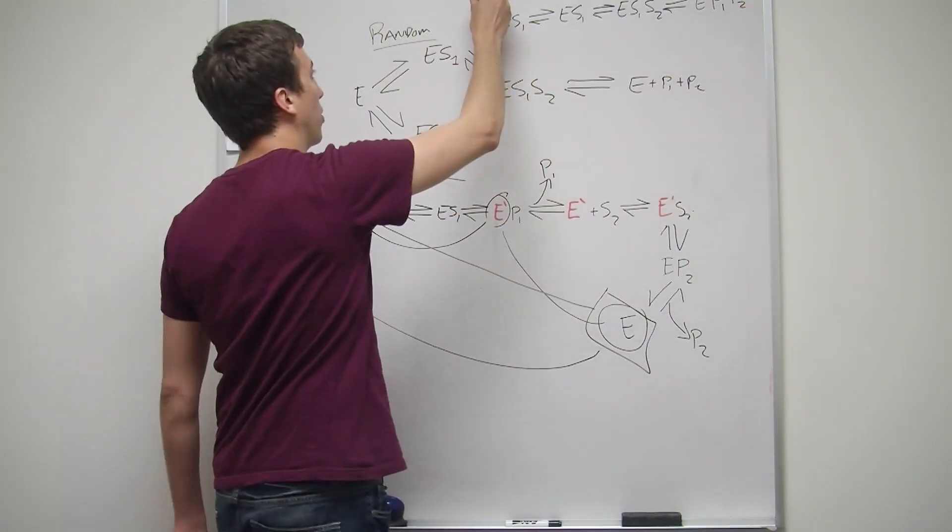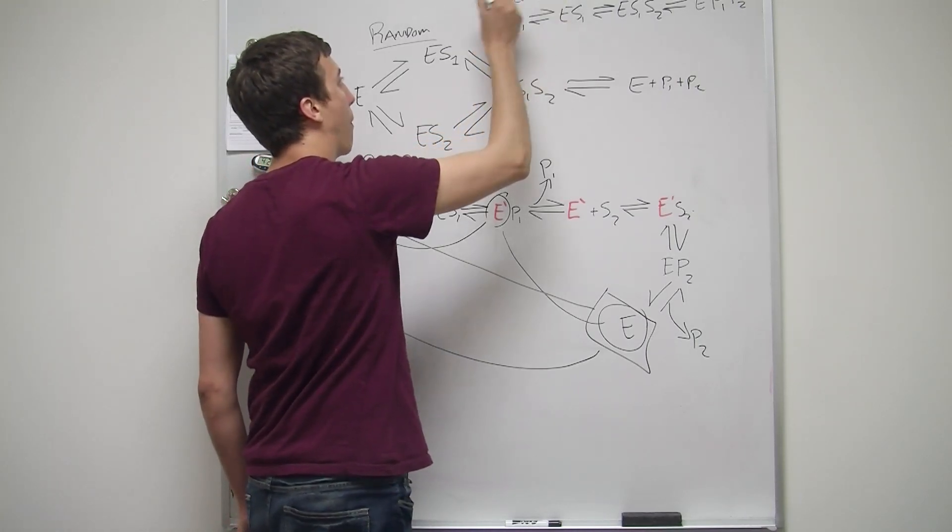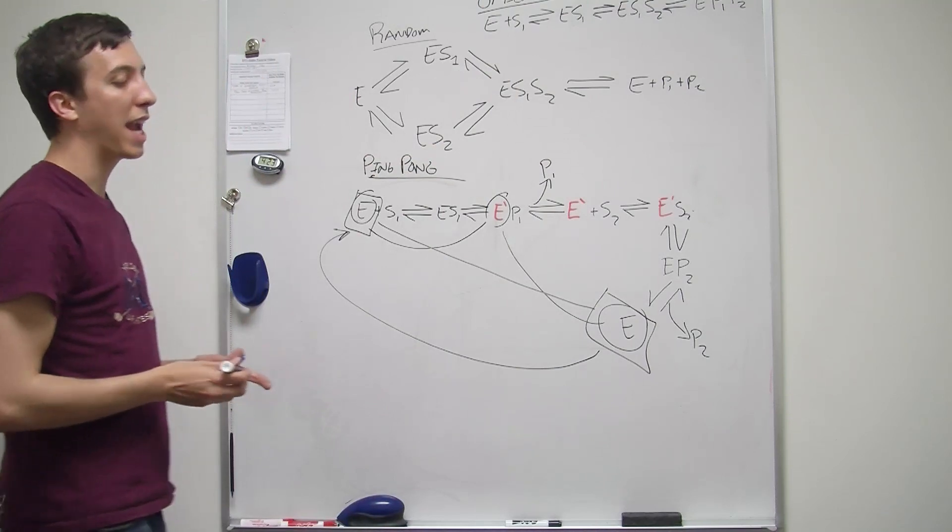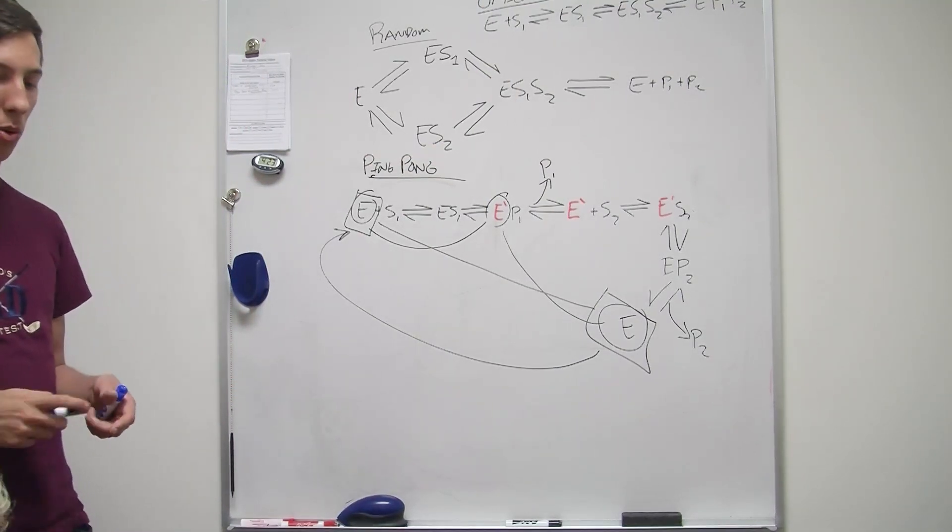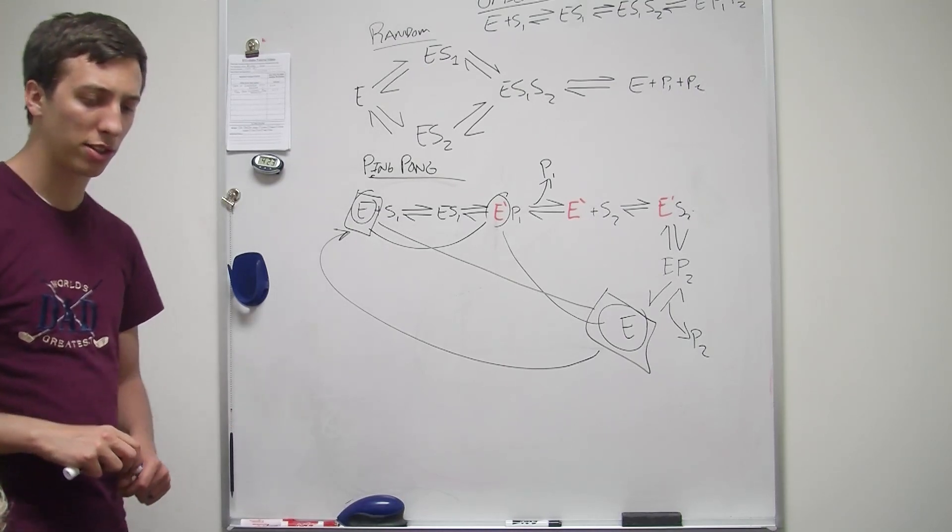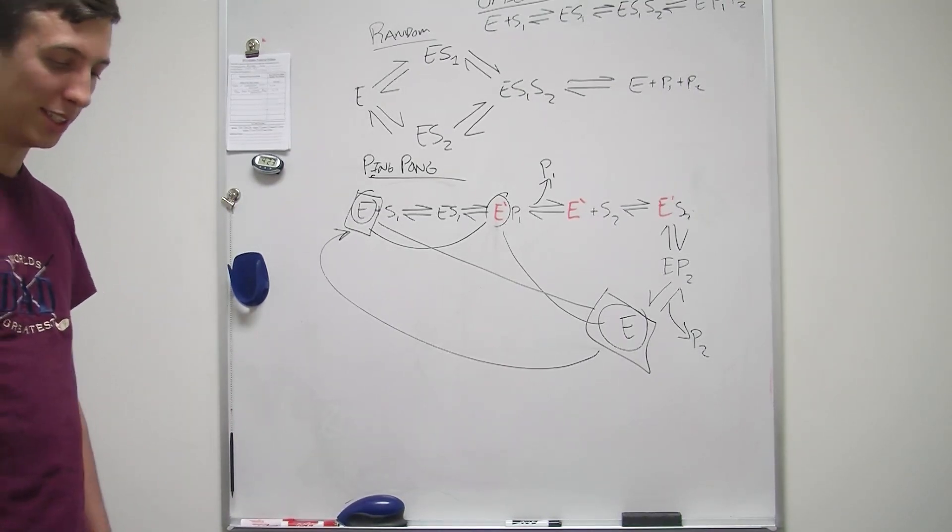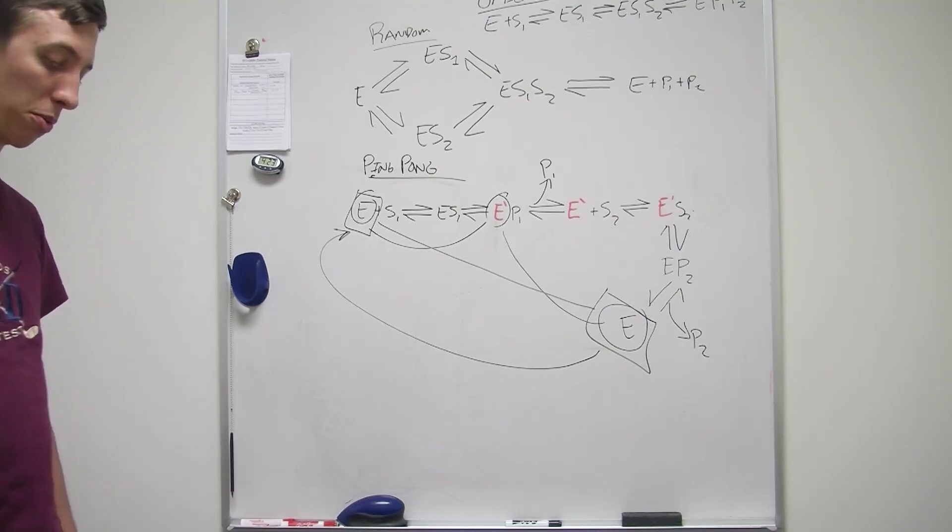So that's ordered in a nutshell. And yeah, he has to get both of them in a specific order to perform his action and create the products. Now the exact reason as to why these form, you know, I don't know. I don't even think the book really explains it.